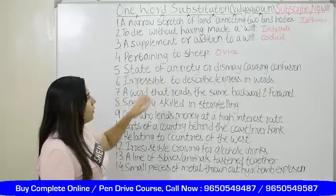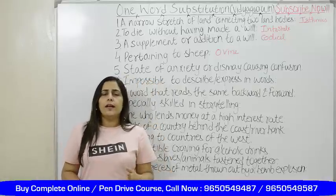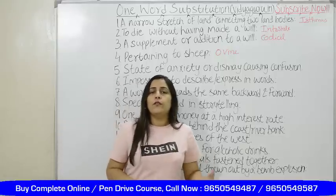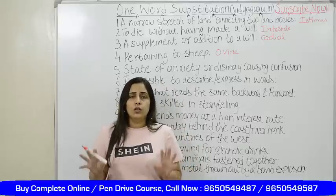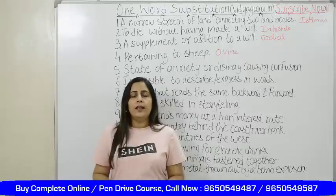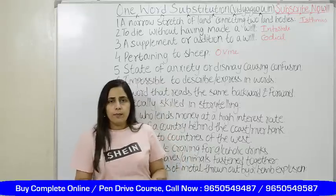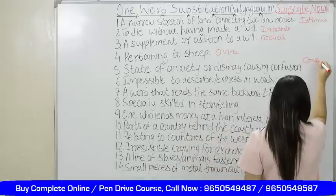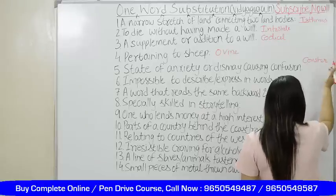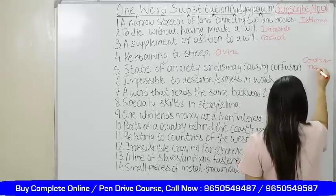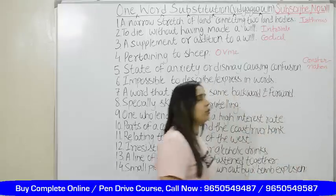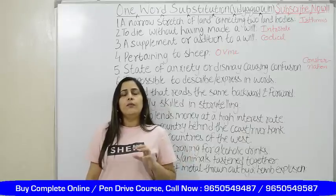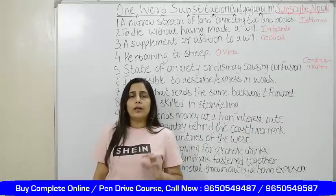State of anxiety — when you are worried, state of angst, state of dismay — that leads to some sort of confusion. That is known as consternation. Consternation is basically a state of anxiety. When you are anxious, when you are worried about something and that leads to some sort of confusion, that is consternation. The way you pronounce 'monster,' I am writing it in the same manner — conster — and the full word is consternation. State of anxiety, state of angst when you are worried.